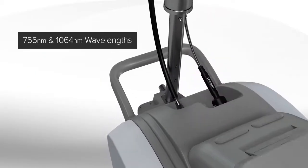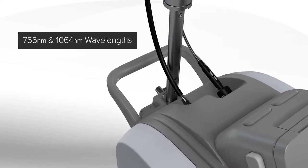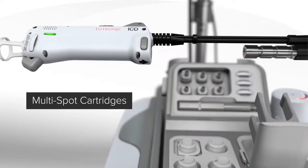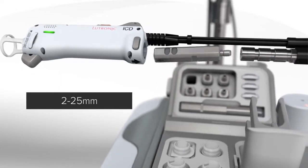Clarity 2's dual wavelength single fiber platform operates at up to 100 joules with easy to change multi-spot cartridges ranging from 2 to 25 millimeters.